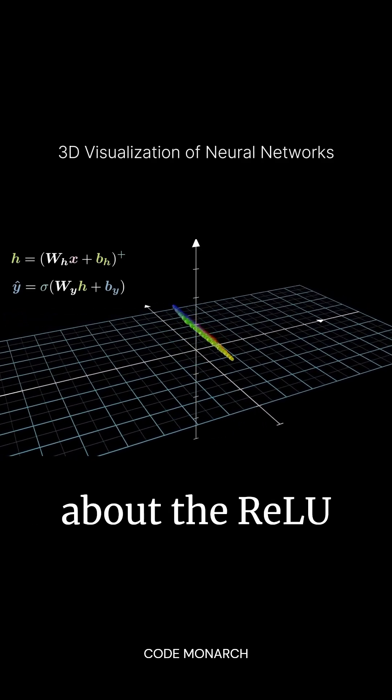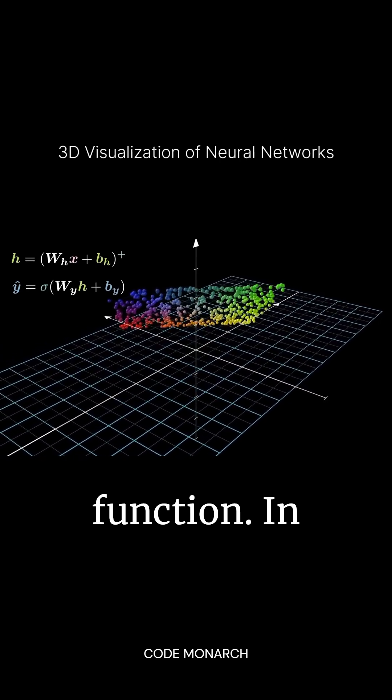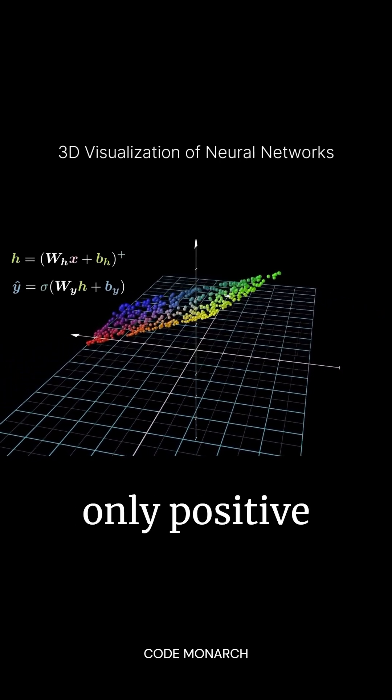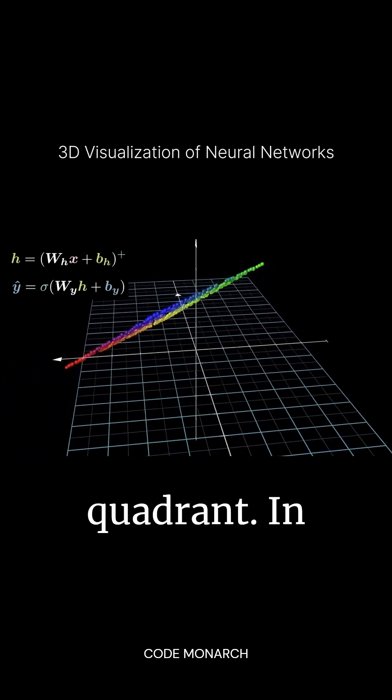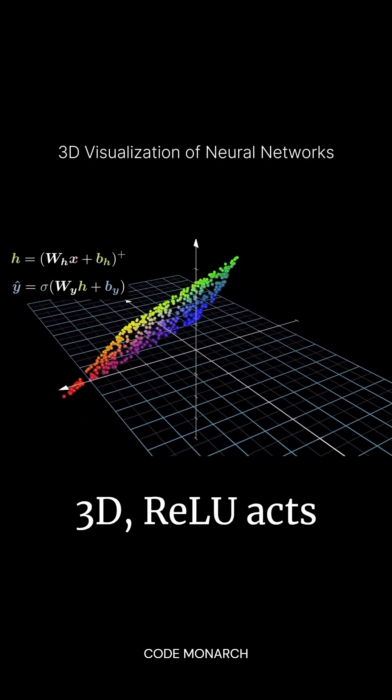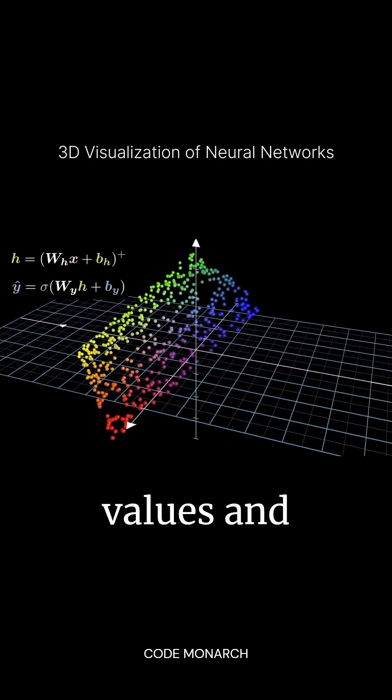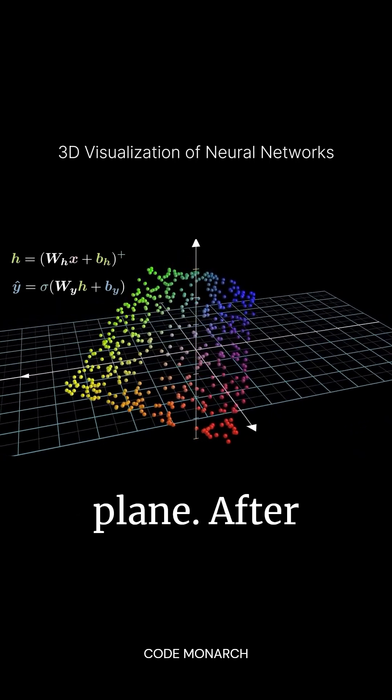Now, let's talk about the ReLU activation function. In 2D, ReLU kept only positive inputs, which was the first quadrant. In 3D, ReLU acts within the first octant, preserving only positive values and folding others into the axis plane.